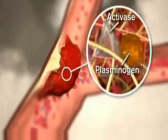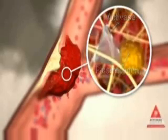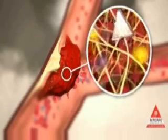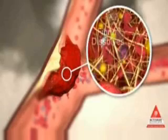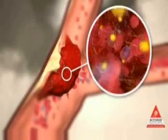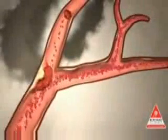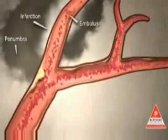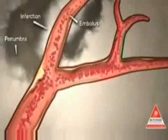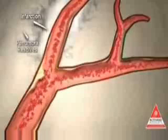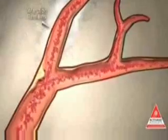Activase is administered by IV infusion within three hours of acute ischemic stroke symptom onset. Activase binds to the fibrin in a thrombus and converts plasminogen to plasmin. Plasmin then breaks the strands of fibrin and dissolves the clot. As the clot dissolves, blood flow is restored and viable tissue may be reperfused. Although the original infarction remains, when surrounding cells in the penumbra are saved or reperfused, function may be restored.